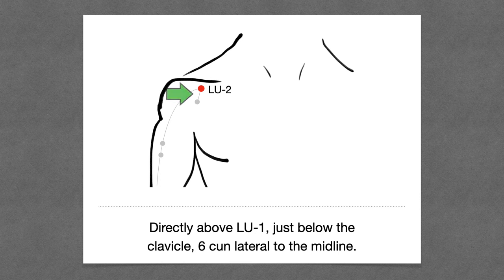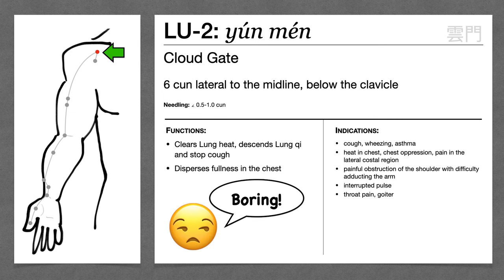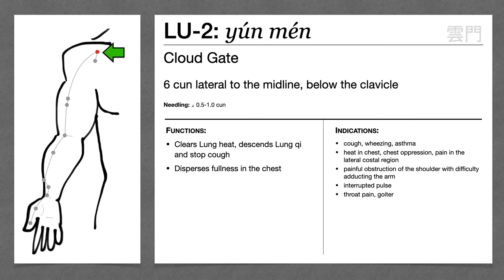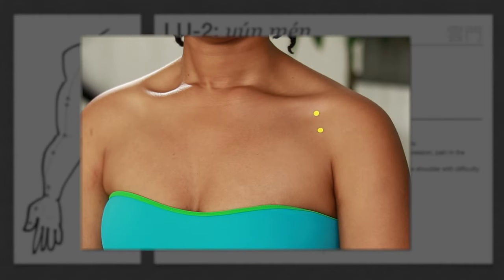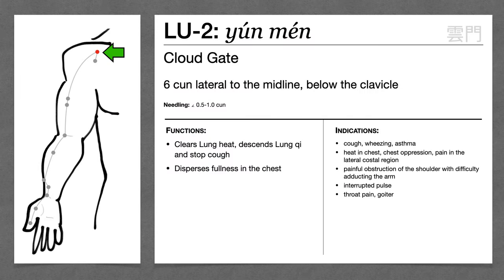Lung 2 is above Lung 1, just below the clavicle, six cun lateral to the midline. Lung 2 is honestly not that interesting. Maciocha says that Lung 2 is very similar to Lung 1 in its actions, but less strong. Because Lung 2 is close to the shoulder in the deltopectoral triangle, it can be used for shoulder pain, especially when there's difficulty adducting the arm.